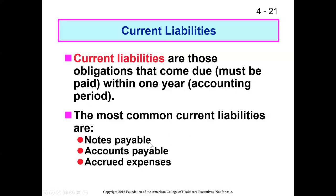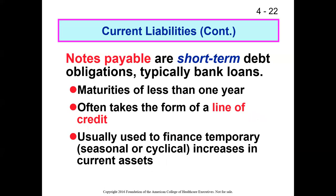Some of the most common current liabilities are notes payable, accounts payable, and accrued expenses. Notes payable are short-term debt obligations, typically bank loans. They often have a maturity of less than a year, often take the form of a line of credit, and are usually used to finance temporary increases in current assets.